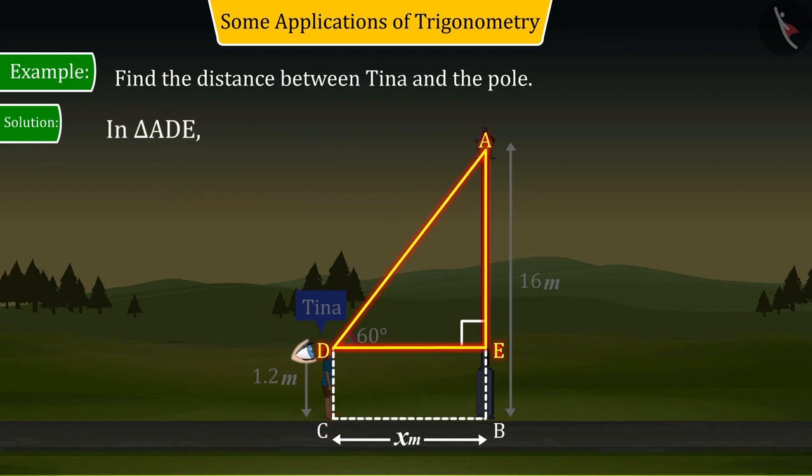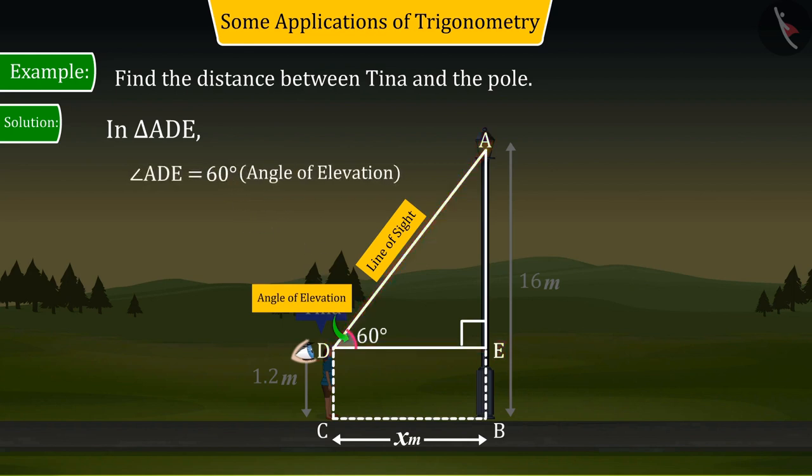In triangle ADE, the elevation angle formed by line of sight and horizontal line will be angle ADE and it is 60 degrees.